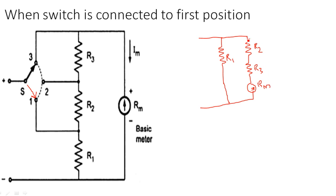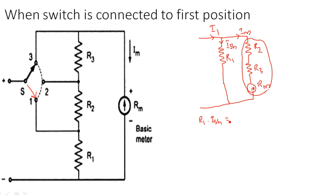There is a series connection of resistors on the opposite arm: R2 plus R3 plus Rm, whereas this is R1. The current flowing through R1 is Ish, and the current flowing through the other arm is Im, and the current coming in is I1 because we have selected the first position. The equation is: R1 × Ish = Im × (R2 + R3 + Rm).